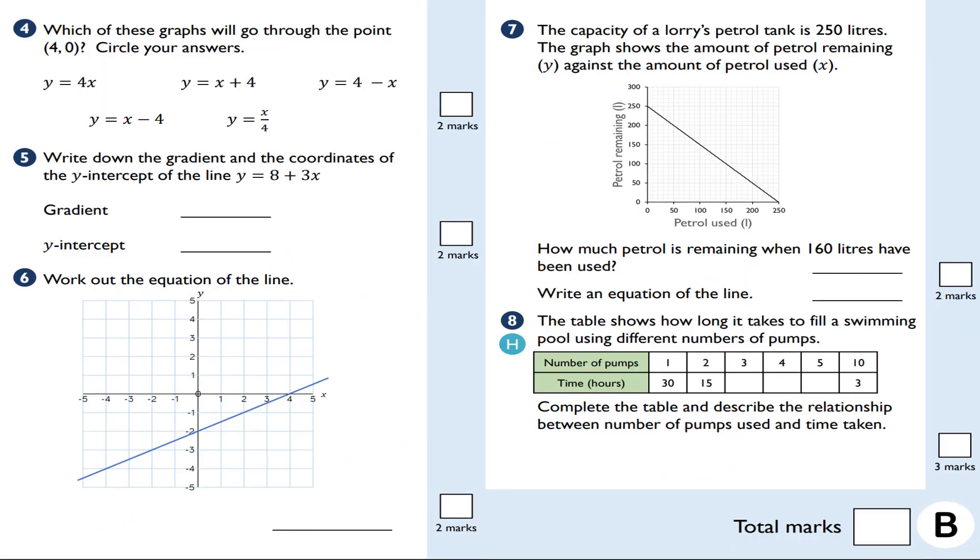Question number four. Which of these graphs will go through the point 4, 0? So, when x is 4, y is 0. When x is 4, y is actually going to be 4 times 4, which is 16, so it can't be that one. Because 4 times 4 makes 16, and not 0. When x is 4, y is 8. When x is 4, so that's going to be 1 answer. When x is 4, y is going to be 0, so that also works. How about this one? 4 divided by 4 is going to be 1, not 0, so it can't be that one there.